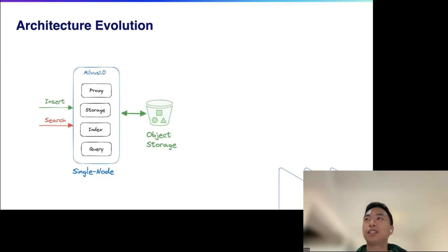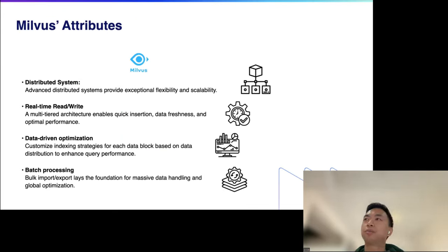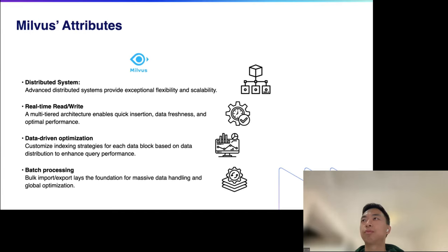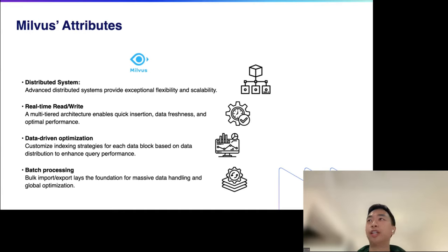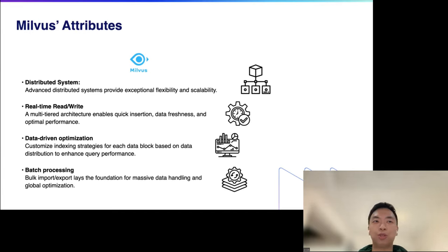Quick question: is the big vision to have fast ingestion with delete and updates — do you see Milvus as a database of record, or more like Elasticsearch where you stream updates from a primary database? We have both kinds of usage. Some users stream data from a primary database into Milvus for search. But Milvus is also used standalone as the primary store for vector search itself — it's a database, not just a search engine.